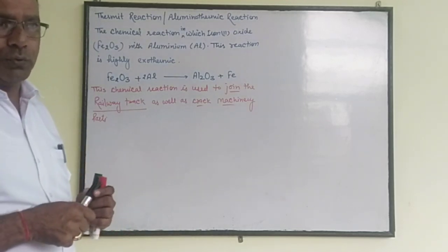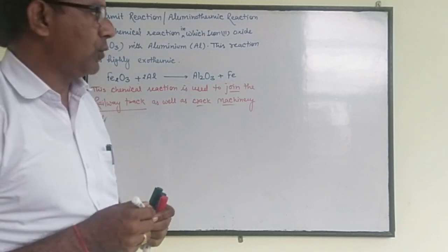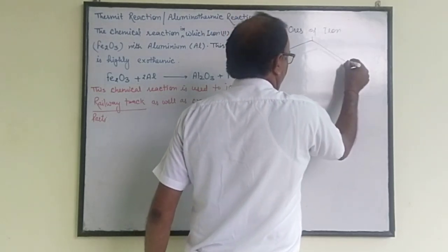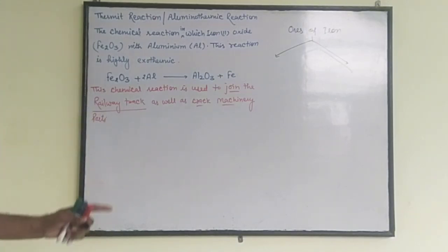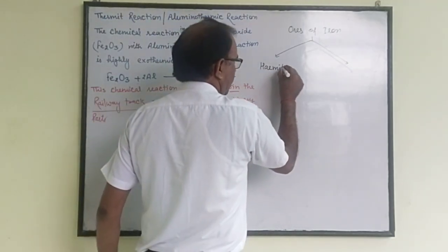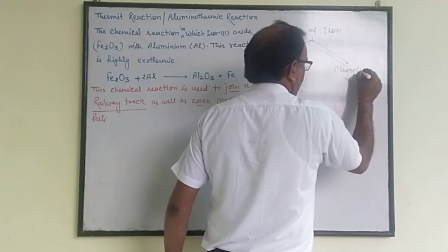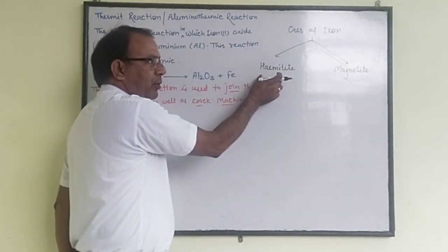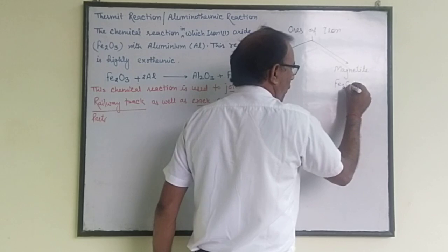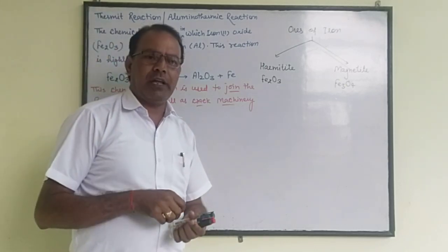There are two types of ores: iron ores and aluminium ores. The ores of iron are hematite and magnetite. The chemical formula of hematite is Fe2O3 and the chemical formula of magnetite is Fe3O4. These are the two ores of iron.